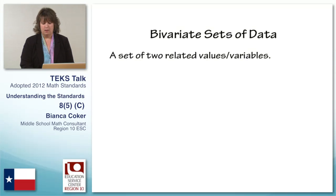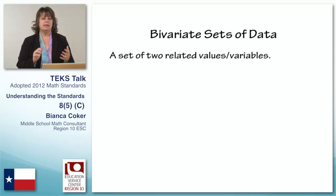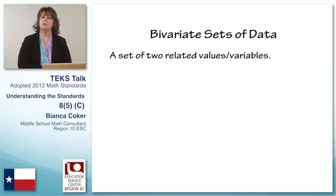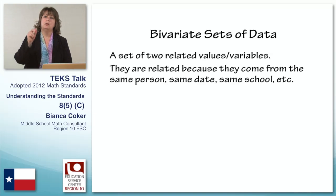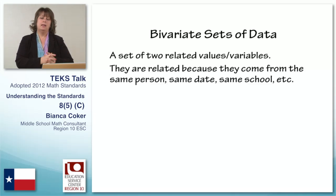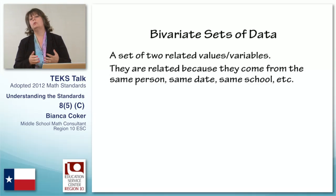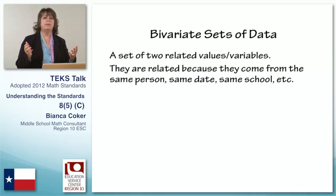Well it's really not that hard. Bivariate sets of data — think about a set of two related values or variables. For example, I have a height and I have a shoe size. The other folks in the studio have heights and shoe sizes. So for each person, we have two pieces of data. That's a bivariate set of data. They are related because they come from the same person, same date, same school, whatever.